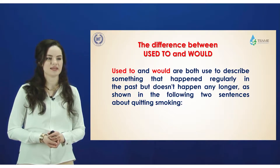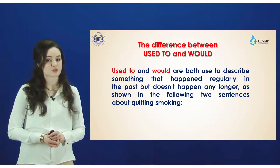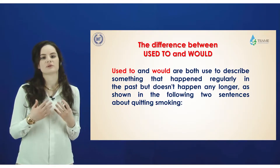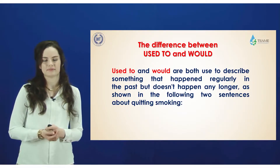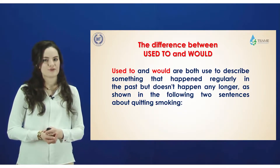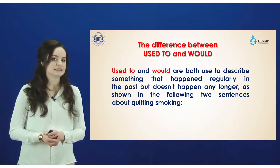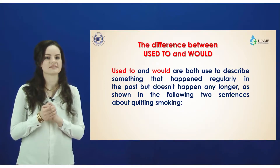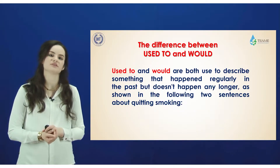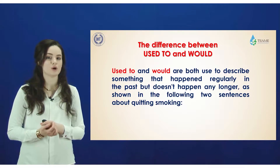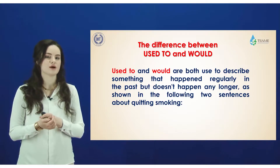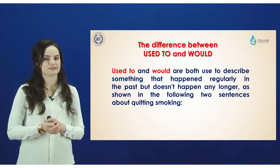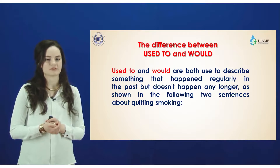Used to and would are both used in description of past habits or situations. But first of all, you should know that if you miss some little detail, you will lose the whole meaning of the sentence. For this purpose, you should investigate them deeply and know how to use this or that construction in a particular sentence.